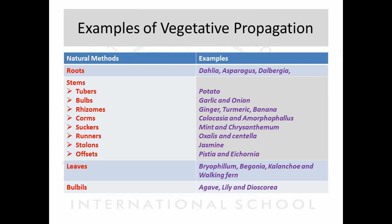Now the stem is a very important aspect of vegetative propagation, as in different plants the stem acts as a vegetative propagule with different names. Tubers act as vegetative propagules in potato; bulbs in garlic and onion; rhizomes in ginger, turmeric, banana; corms in Colocasia and Amorphophallus; suckers in mint and chrysanthemum; runners in Oxalis and Centella; stolons in jasmine.